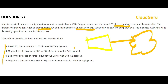The company's goal is to maximize availability while decreasing operational and administration costs. That helps rule out option A, which suggests installing SQL Server on EC2. Doing so would increase operational and administration costs because you'd need to install, maintain, and patch the database yourself. So A is totally wrong. We are now sure the answer is one of B, C, or D — but all three use RDS, so we need to differentiate further.